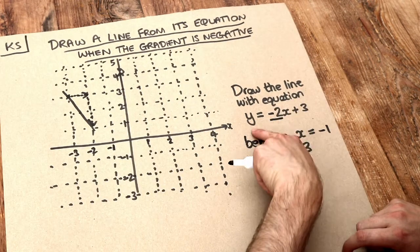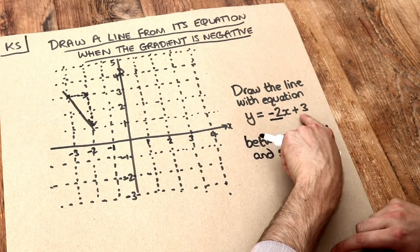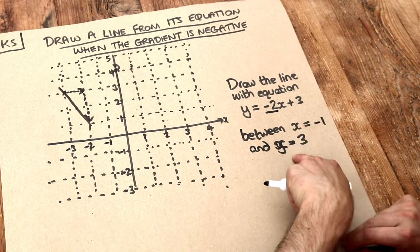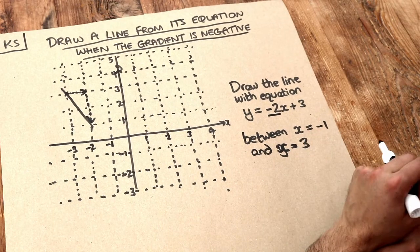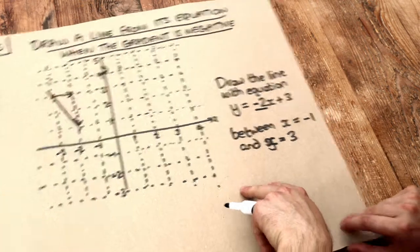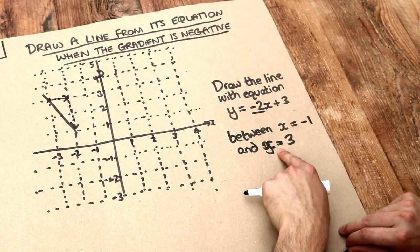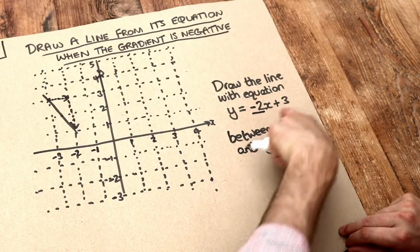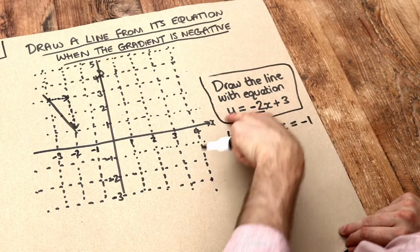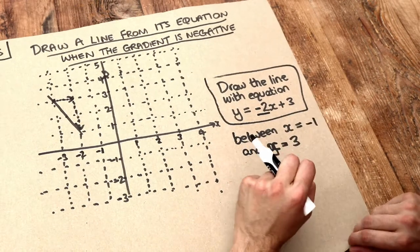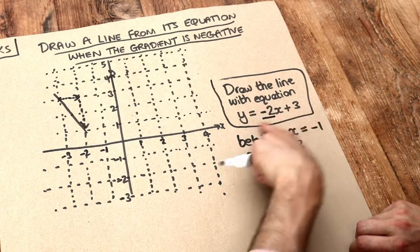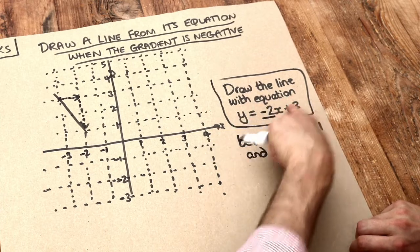Now we want to draw this line with equation y equals minus 2x plus 3. It's told us the two values of x we want to draw the line between. All we need to do is use these values of x and substitute them into the equation to work out what y would have to be. This equation is sort of like a membership rule — it basically says if a point wants to be on this line, it has to satisfy the equation.